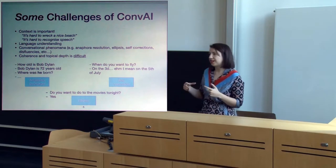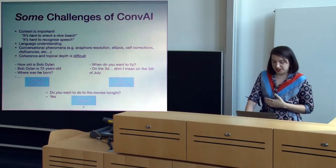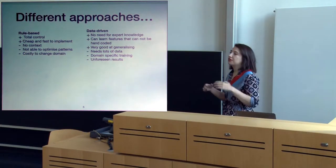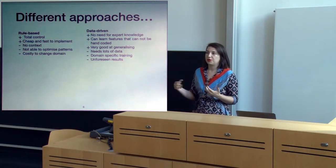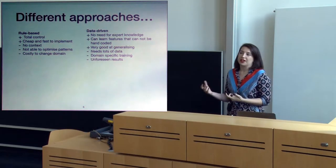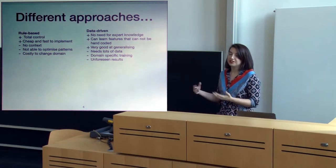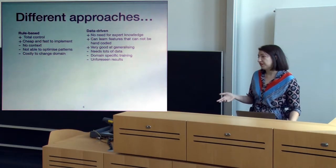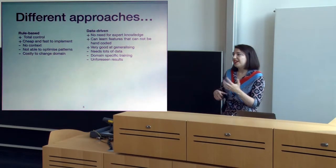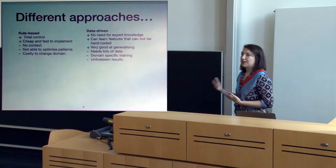Coherence and topical depth are challenges — it's easy for humans to have a sustained conversation on one topic, but extremely hard for a machine. For task-based systems, people have used rule-based approaches where you write rules for how to book a flight. That's nice because you have precise control of everything your system understands and says — no surprises. But if you want to extend it to cover multiple domains like restaurants, you basically have to rewrite the entire system from scratch.